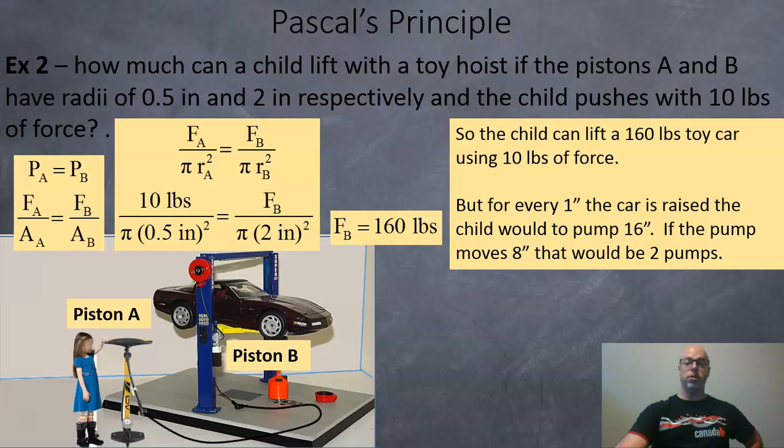Here we got Pascal's principle again. Pressure on A side equals the pressure on the B side. Force divided by area on the A side equals force divided by area on the B side. The force by the child is 10 pounds and the child has a piston of 0.5 inches which we're going to square.